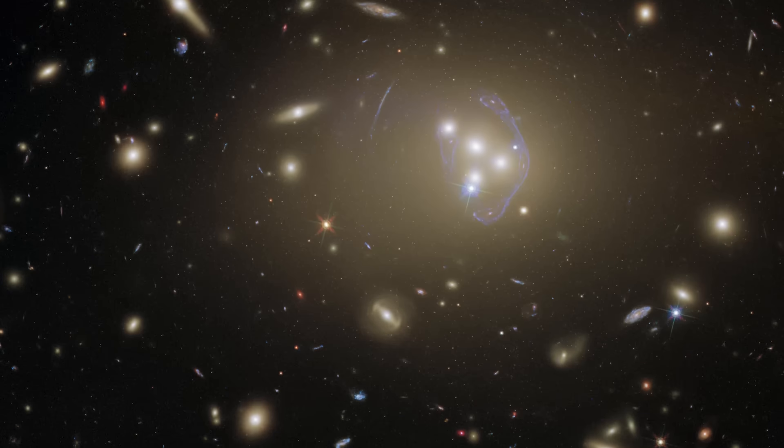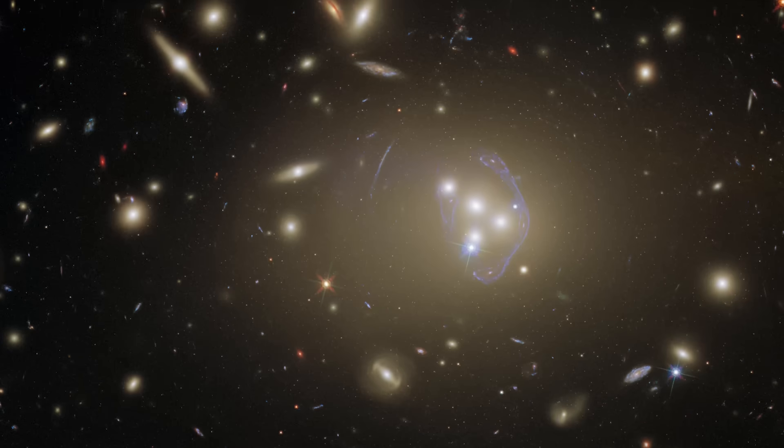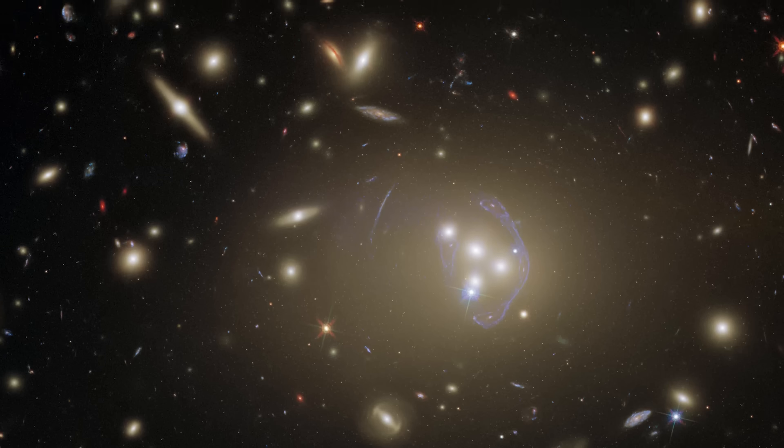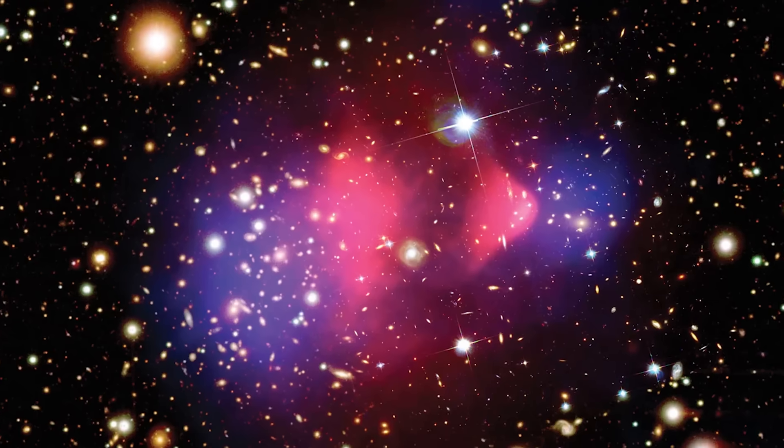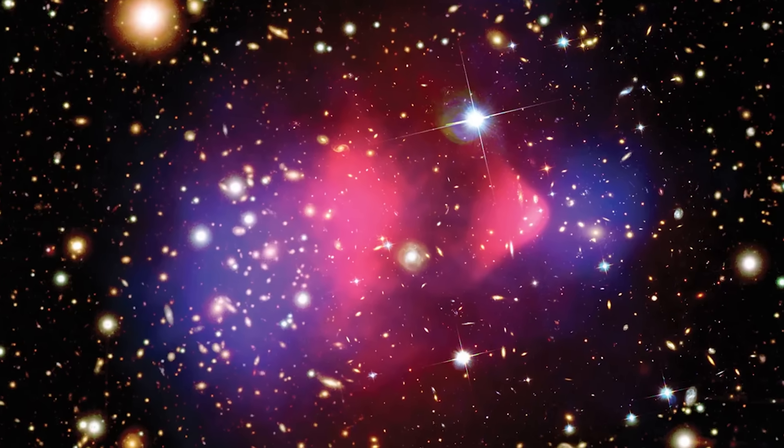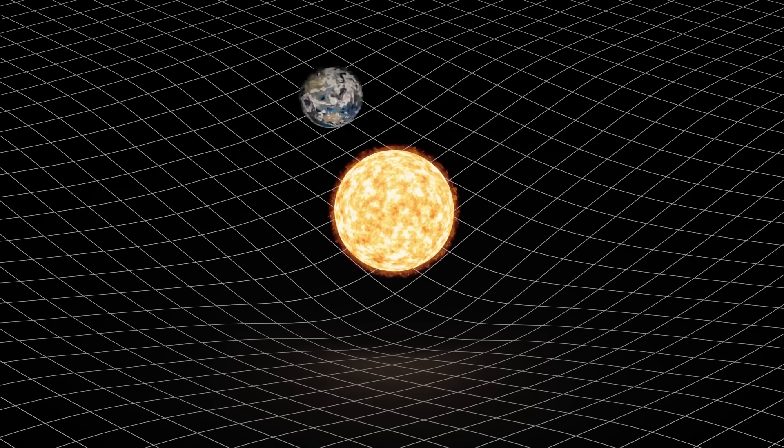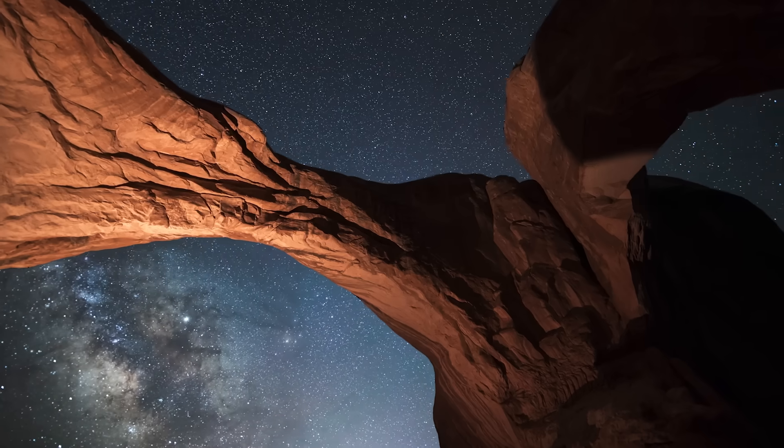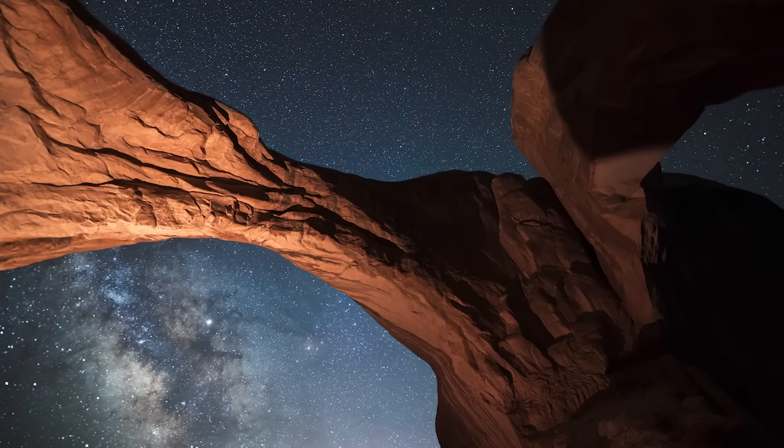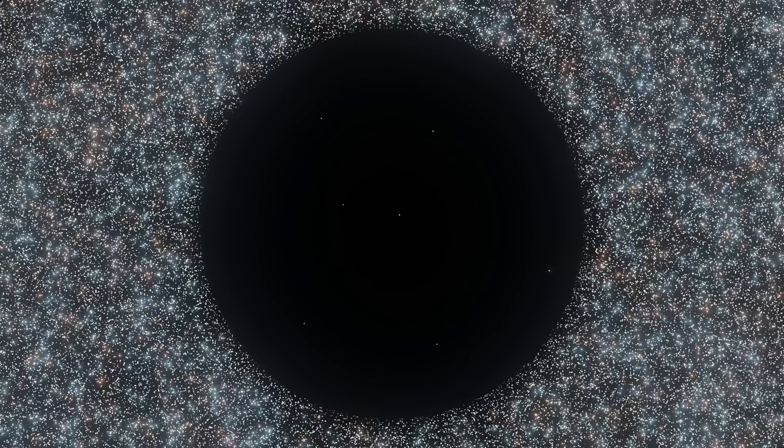The Hubble tension is a big deal because it suggests that something might be missing or misunderstood in our current understanding of the universe. It could mean that there's new physics to discover, something beyond what we know about dark energy, dark matter, or even the nature of gravity. However, another simple explanation to the Hubble tension is our unusual place in the universe. Inside the KBC void, there are fewer galaxies and less matter compared to regions outside the void.